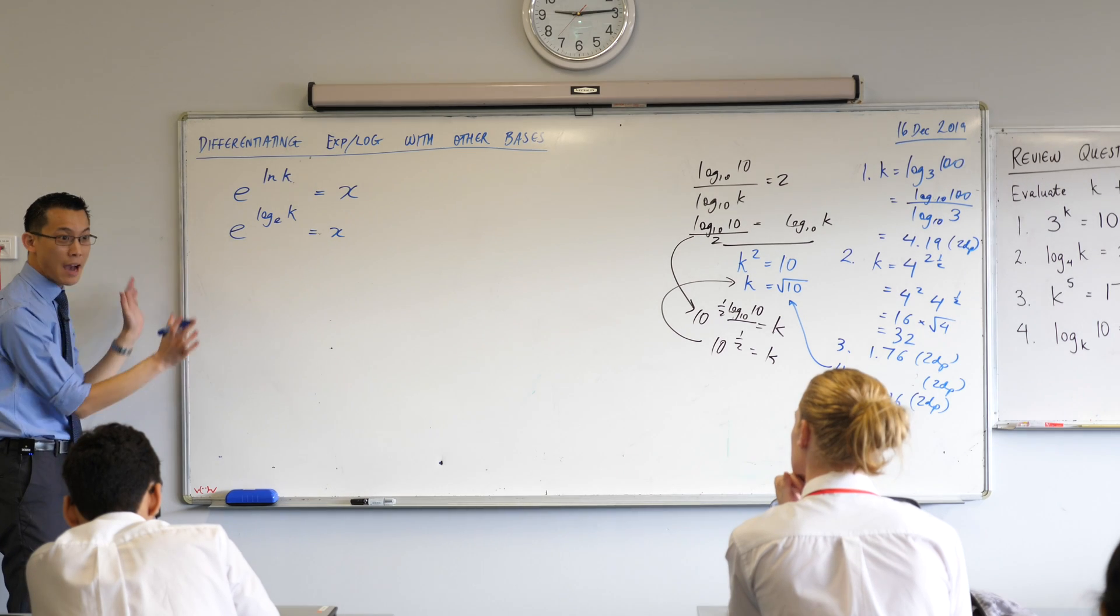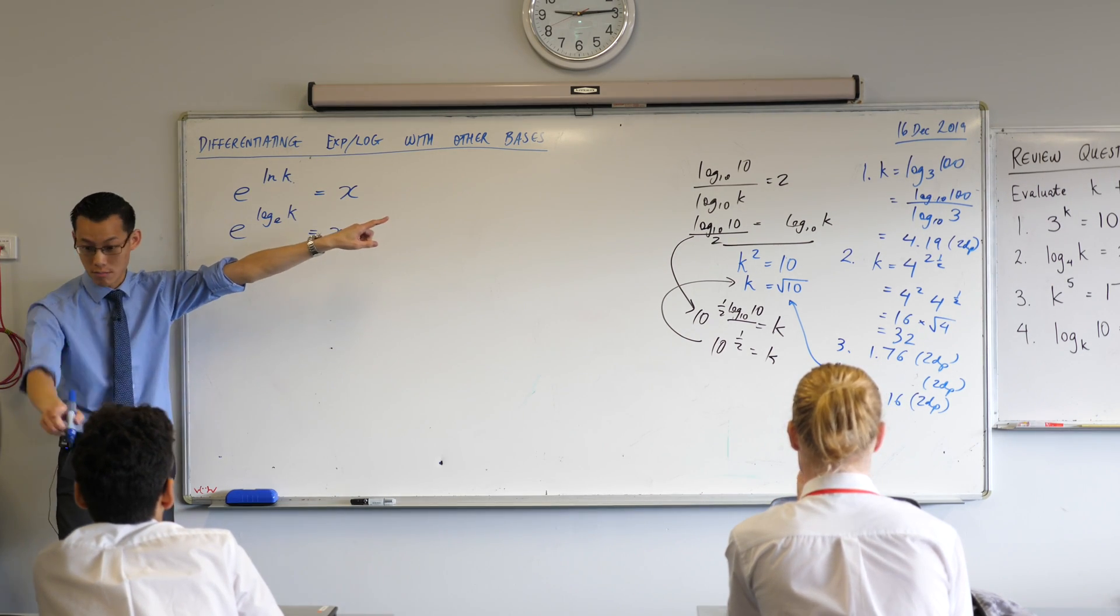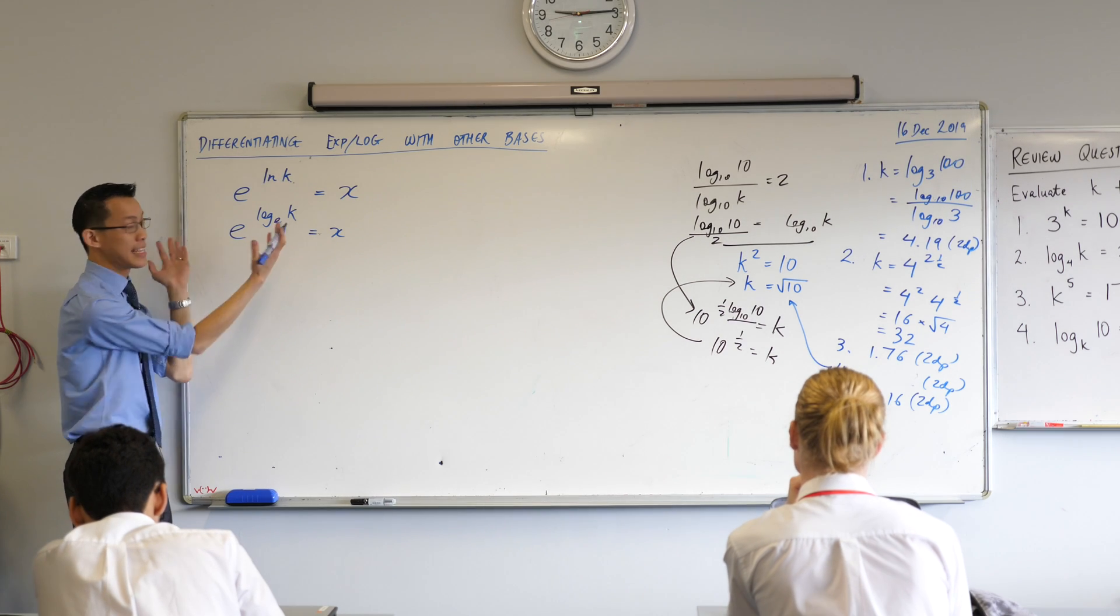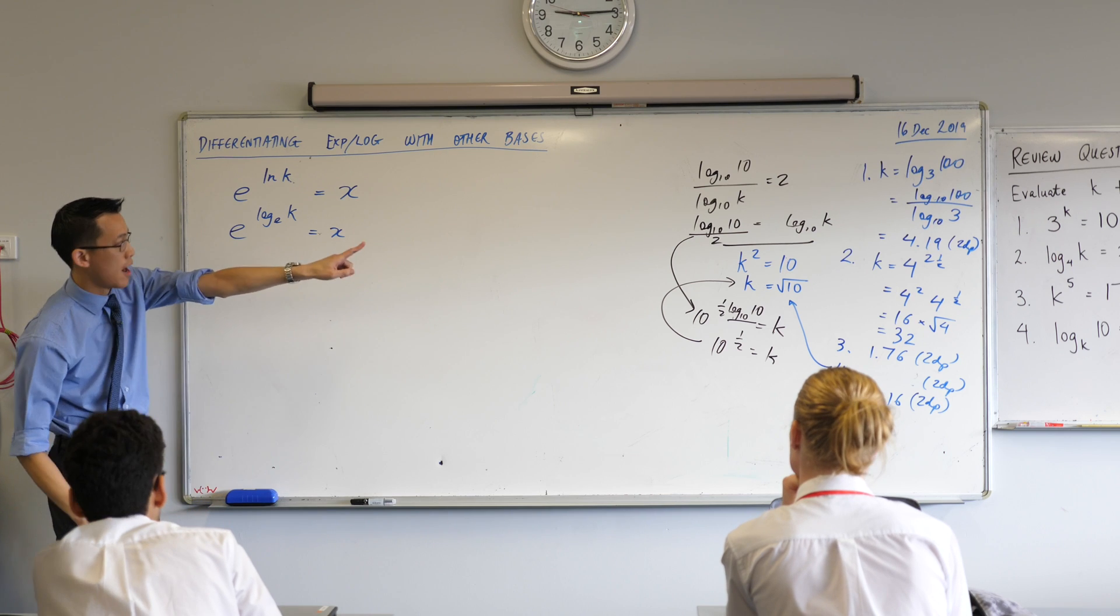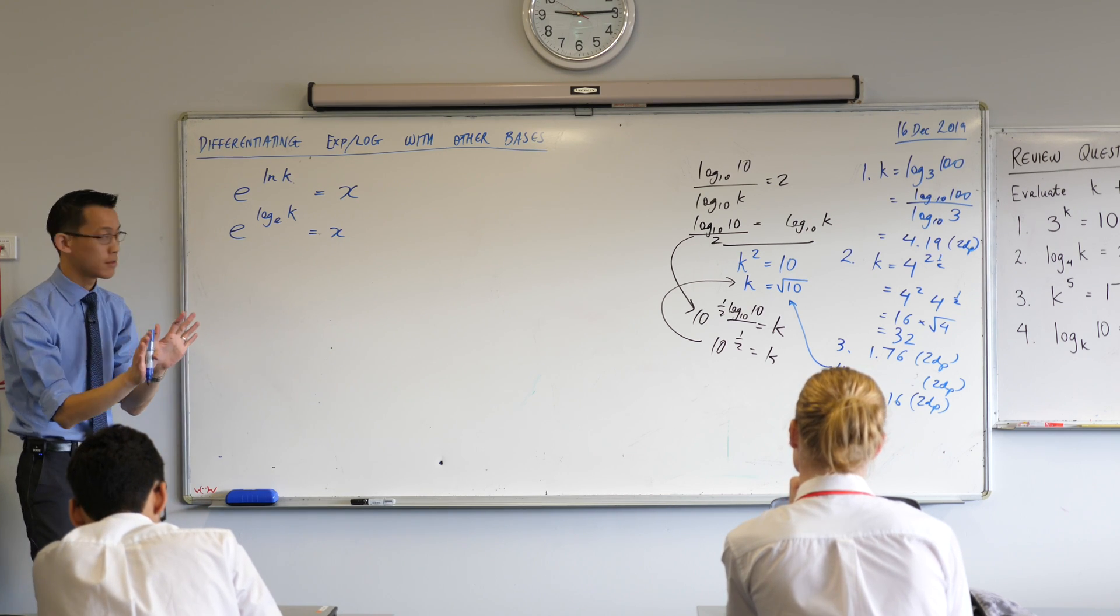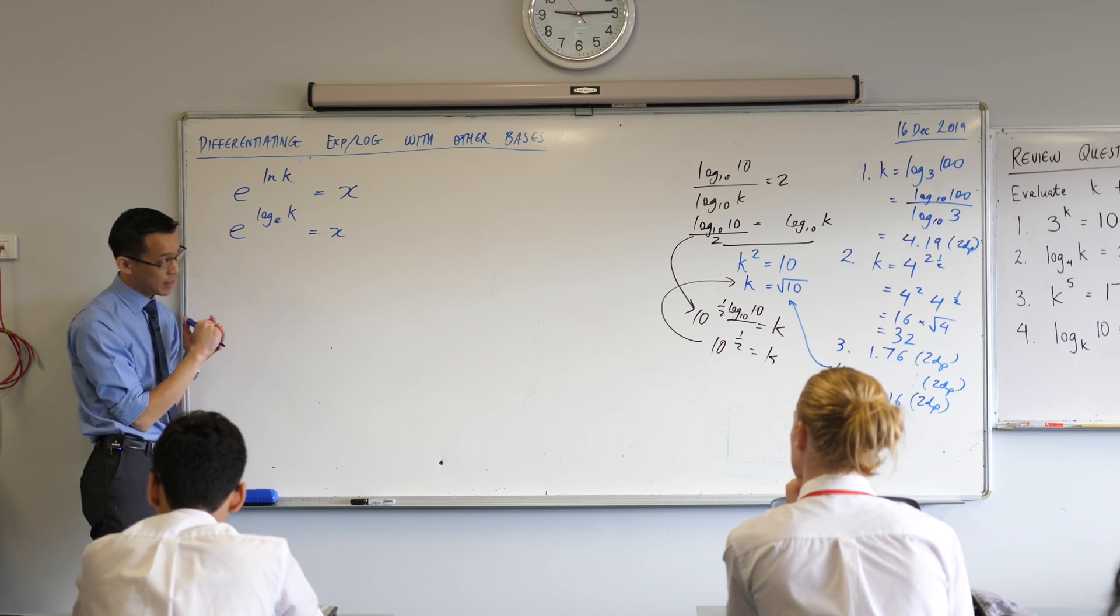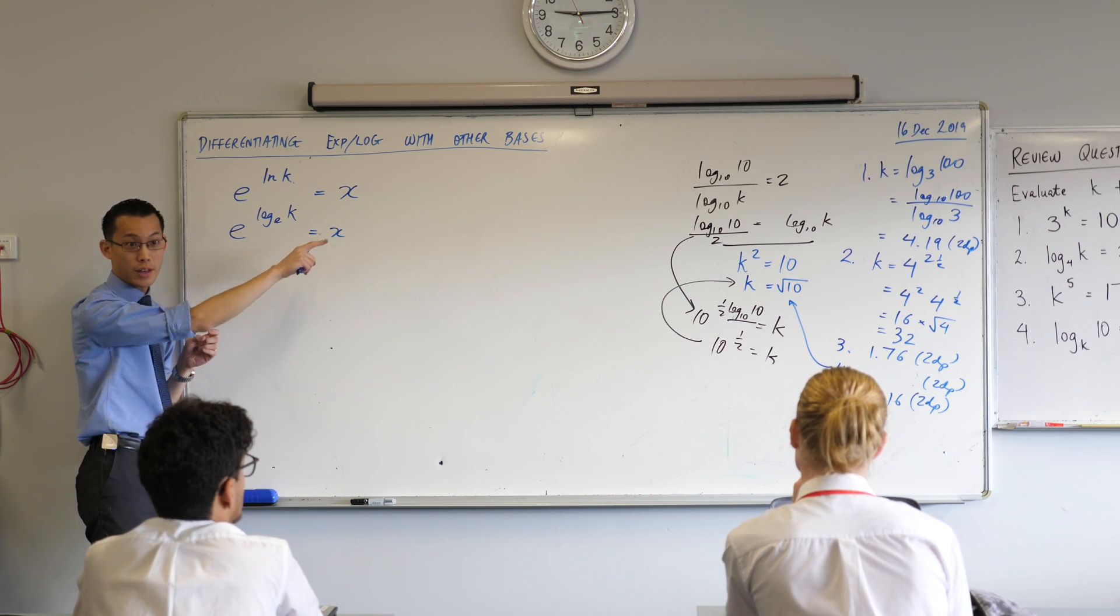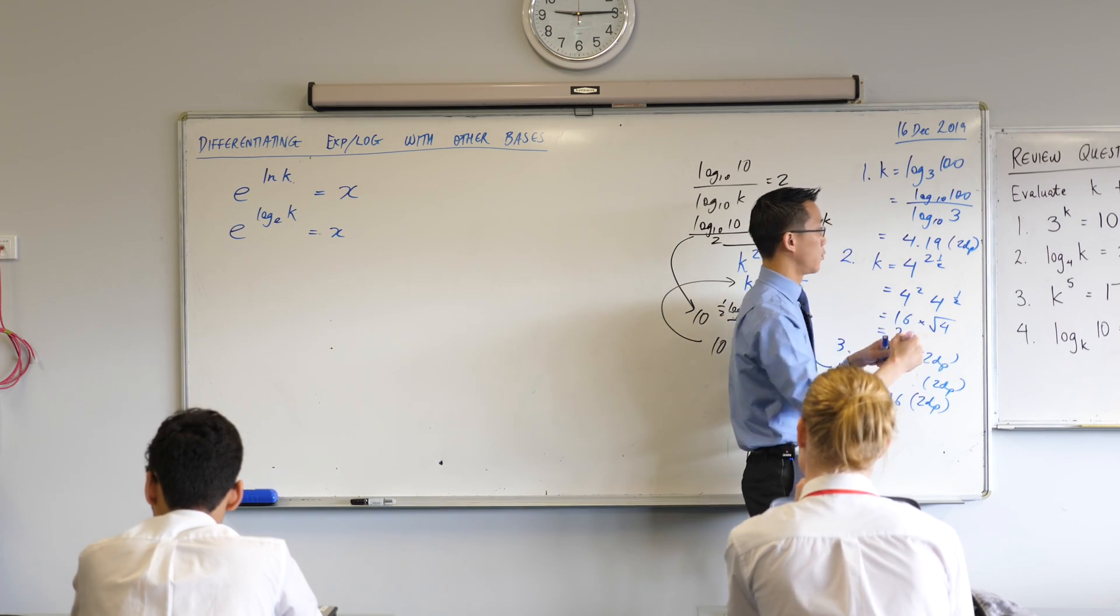So think about how we rearrange this. If you like, have a look at how you did question one. That's exactly what we're going to do here, except I don't have three, I've got a. I don't have a hundred, I've got X, and we're just going to rearrange. So what will the new subject be? Look carefully. What became the subject over there?